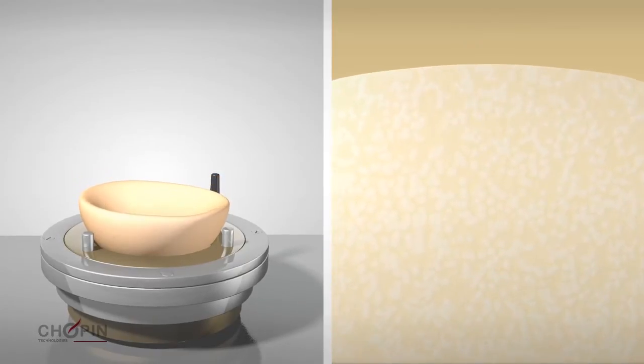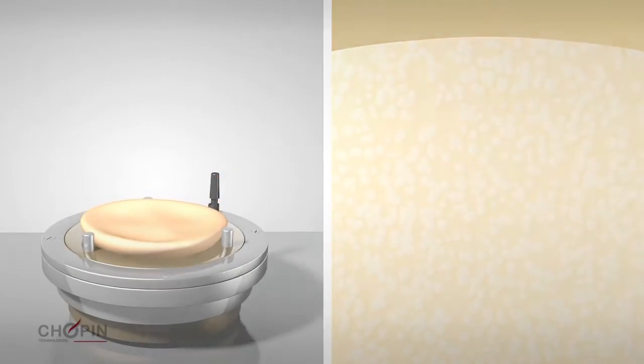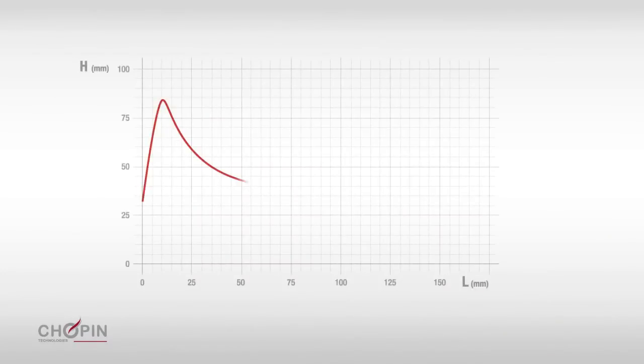The alveograph can be used to analyze all types of wheat: soft, hard, and durum. It provides four key measurements.